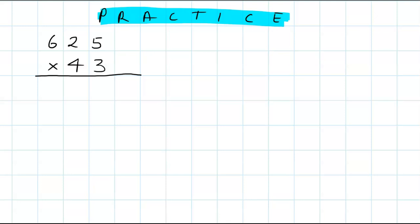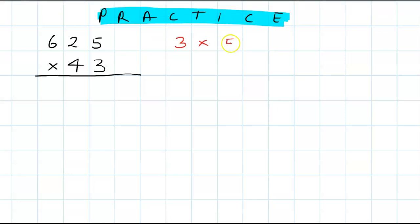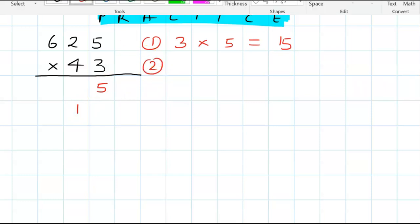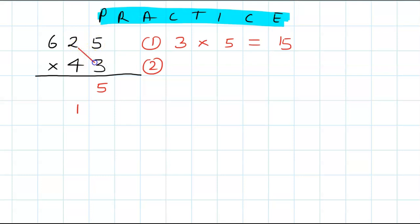Welcome back! Let's check the answer step by step. Step 1: 3 times 5 is 15. Write 5 here and carry 1 forward. Next step: cross-multiply 2 with 3 and 4 with 5.